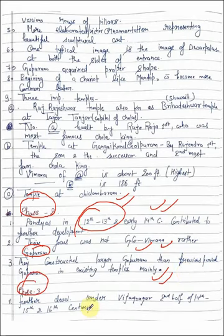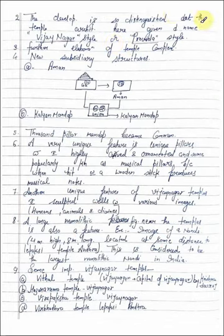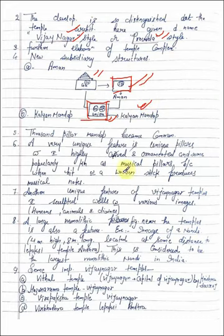Phase 3: Further development under Vijayanagar, second half of 14th, 15th and 16th century. The development is so distinguished that the temple architecture has given a name, Vijayanagar style. There is Aman and Kalyan Mandap. Here is Garbhagriha and Kalyan Mandap, a hall where people were gathered. This structure became different. Thousand pillar mandap became common.